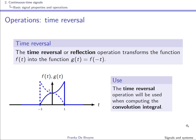Time reversal transforms f of t into g of t equals f of minus t, obtained by mirroring f of t with respect to the vertical y-axis. Since g of t must equal f of minus t for every t, we obtain the mirror image. Time reversal will be used to compute the convolution integral later in the course.